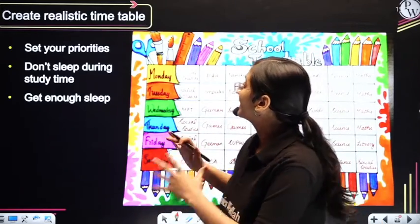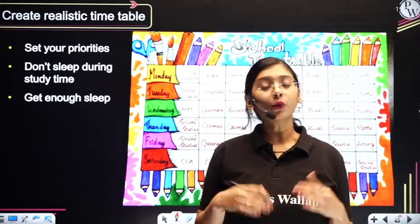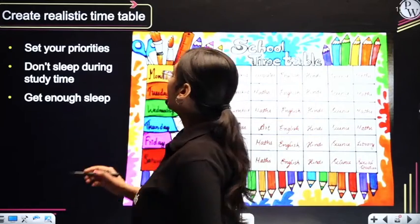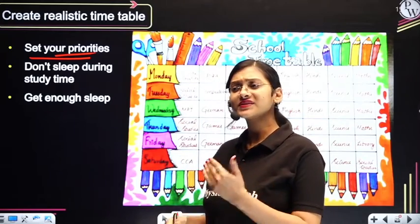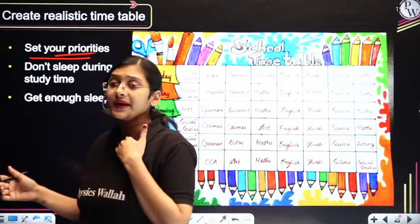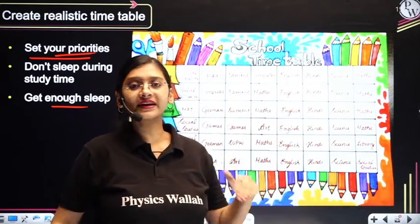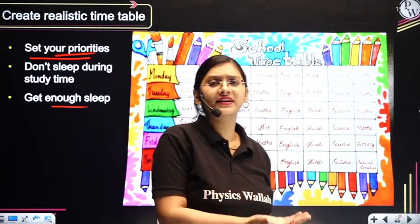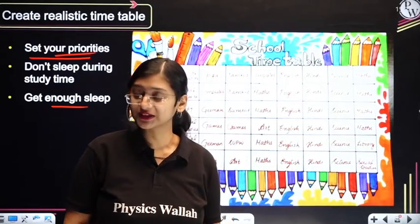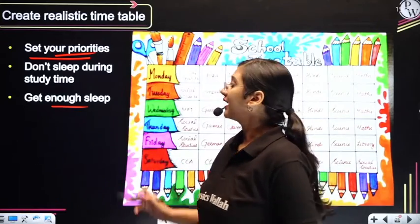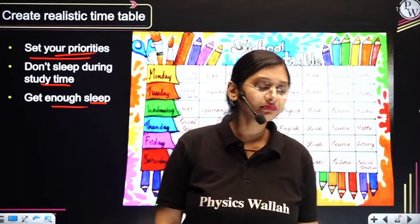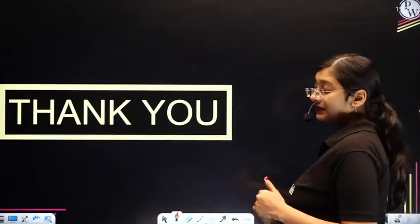Coming to the timetable — I am not saying open 11th and 12th textbooks in 9th and 10th. Just study 9th and 10th every day and whenever you have time, set your priority to study something extra related to 11th and 12th. Make sure you have a proper sleep — don't start reading heavy 11th and 12th theory materials now. Sleep properly so you won't sleep during study time, and make a good, realistic timetable that helps with your 9th and 10th final exams too.